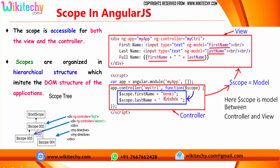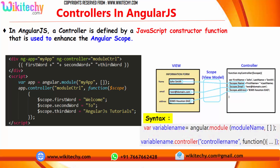The scopes are organized in a hierarchical structure which imitates the DOM structure of the application. Here is the scope tree. You can have multiple scopes and use them. This is the parent scope, and under that you have the child scope.